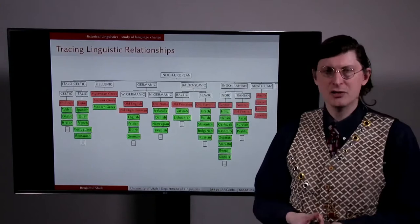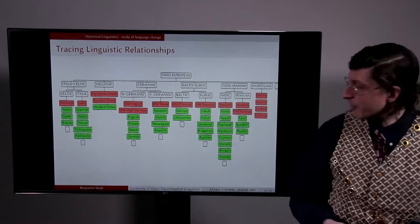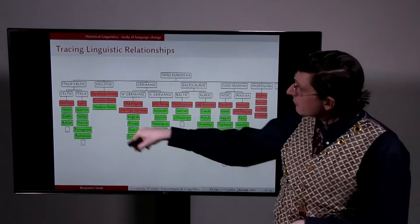Historical linguistics is also interested in tracing linguistic relationships, determining which languages are related to which other languages. For instance, the Romance languages—Spanish, Italian, French, Portuguese, and so on—come from Latin, the language of the Romans.